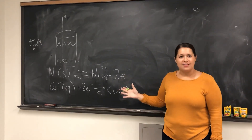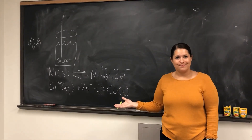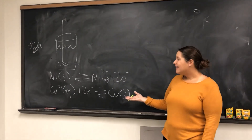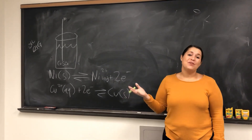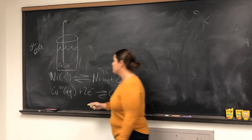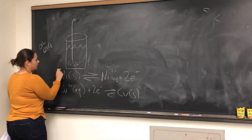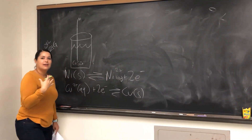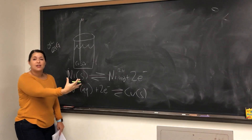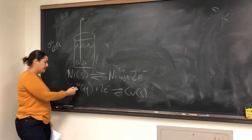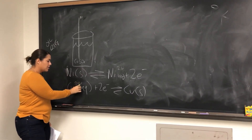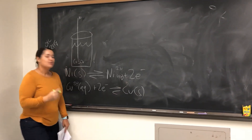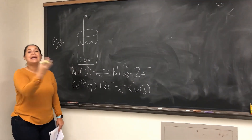Just looking at this, which one is going to be our oxidation? Nickel! Nickel is, because if you look at the charge, we're going from a charge of 0 to a charge of 2+, meaning it's losing electrons. And then reduction is going to be our copper, because we're going from a charge of 2+ to a charge of 0, so we're gaining electrons.